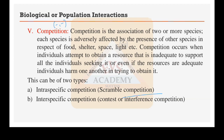Competition can be of two types. Intra-specific competition, also known as scramble competition, occurs within the same species. Inter-specific competition, also called contest or interference competition, occurs between organisms of different species — for example, the crop and weeds in an agricultural field competing with each other.